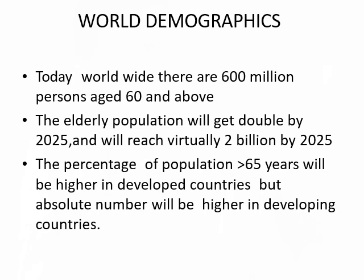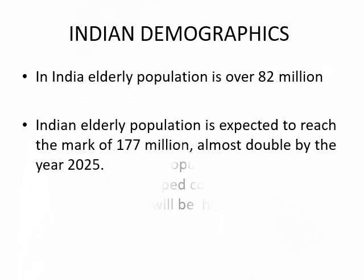The change in the pattern of diseases is called epidemiological transition. Today the world population is close to 800 million elderly. The elderly population will be doubled by 2025, reaching virtually 2 billion. The percentage of population more than 65 years will be higher in developed countries, but the absolute number will be higher in developing countries. In India, the elderly population is currently around 82 million and is expected to double by 2025.